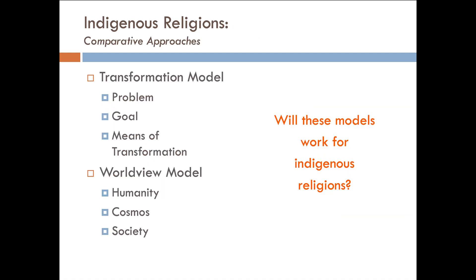Now, how about the comparative approaches? The transformation model asks each of the world's religions what problem it is intending to solve — usually a significant problem. In Judaism, the idea was broken covenant; in Islam, it's pride; in Christianity, it's sin. The transformation model also suggests there is a goal — the elimination of that problem — and a means of transformation, how to get from problem to solution. The worldview model asks about humanity: who and what are we, how did we get here? It asks about the cosmos, origin stories, and how societies should be organized.